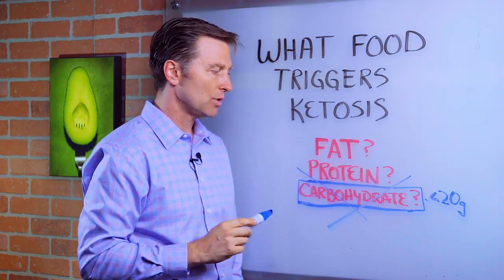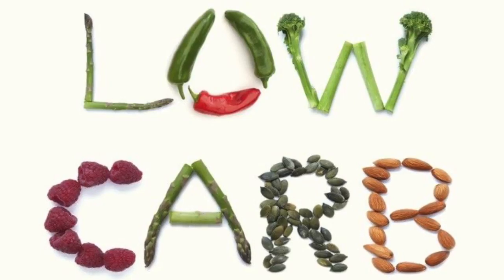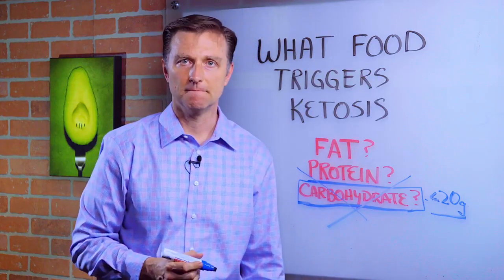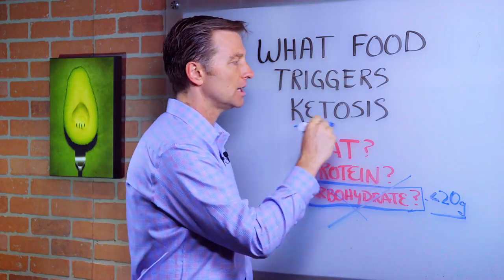So ketosis is a state where your carbohydrates are very low. And the reason why it works is because when you have lower glucose or carbohydrates, you have lower insulin. So it's really the absence of insulin that triggers ketosis.